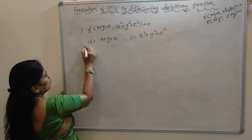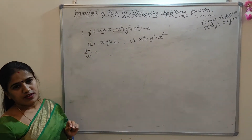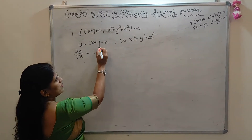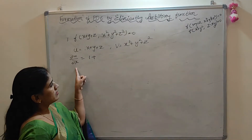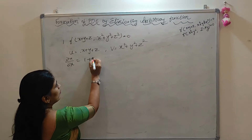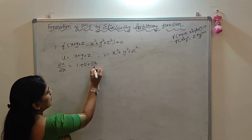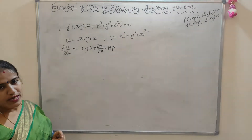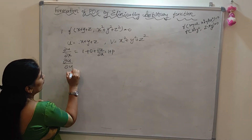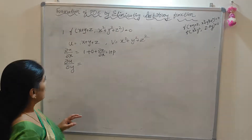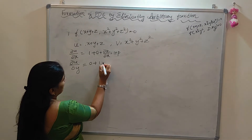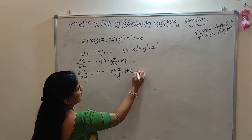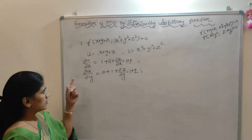Differentiating u partially with respect to x: ∂u/∂x = 1 + ∂z/∂x = 1 + p. Differentiating u partially with respect to y: ∂u/∂y = 1 + ∂z/∂y = 1 + q. So u_x and u_y are calculated.